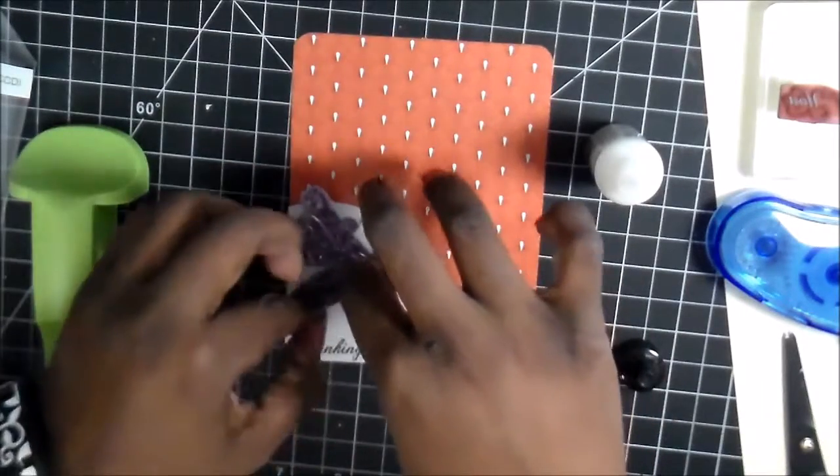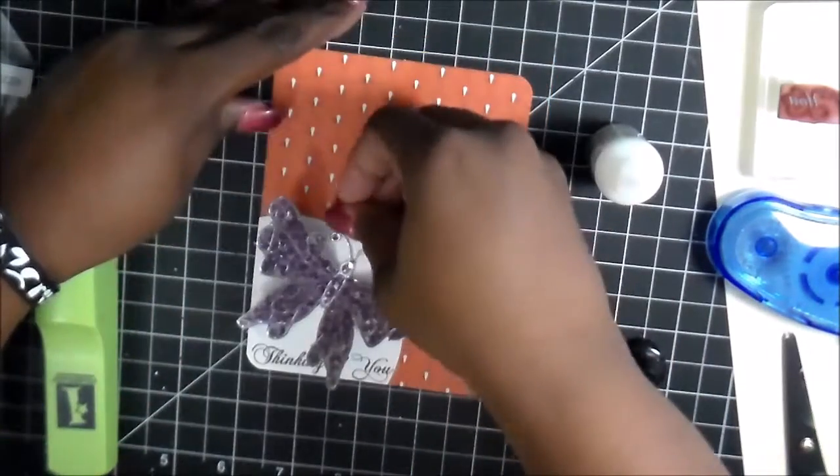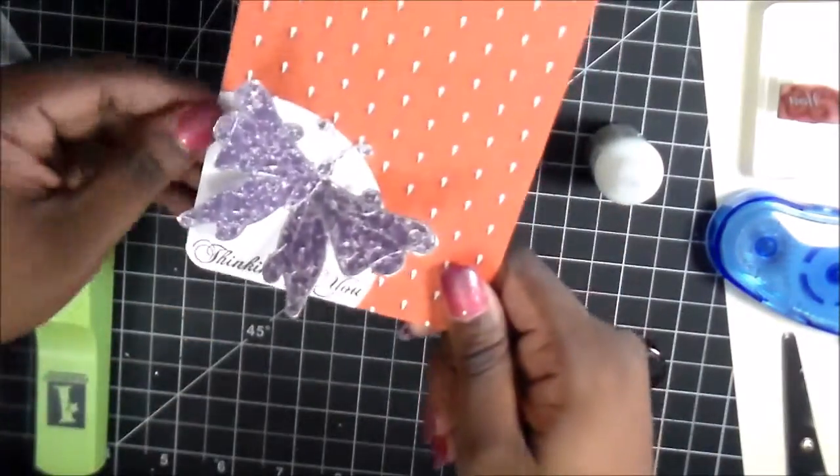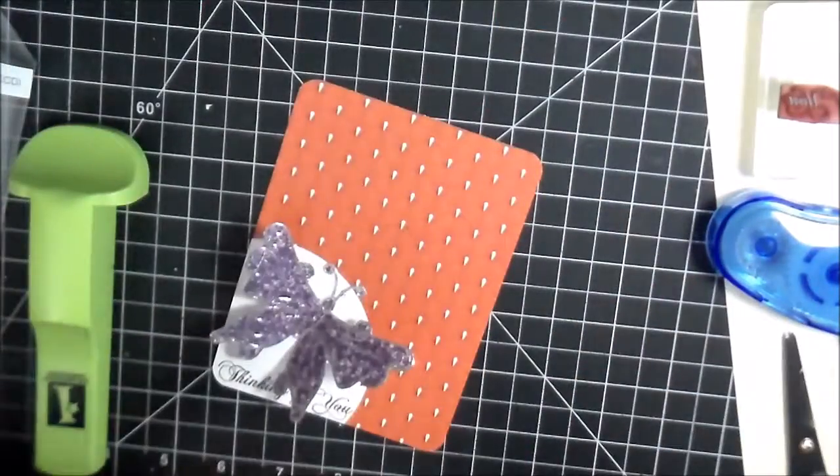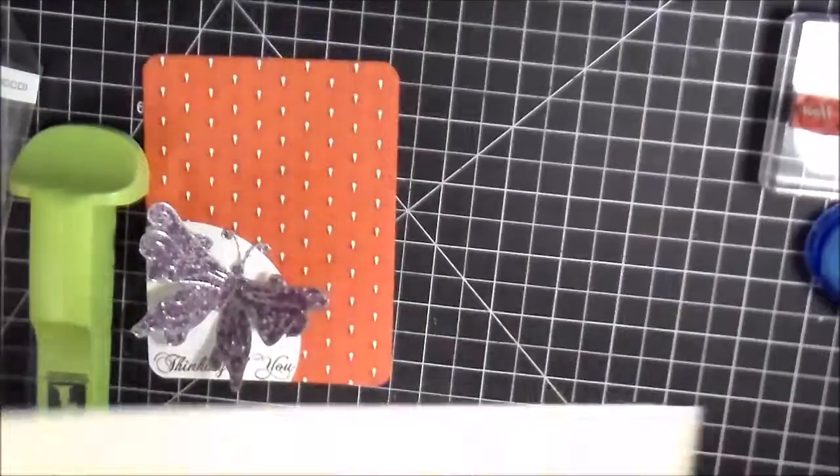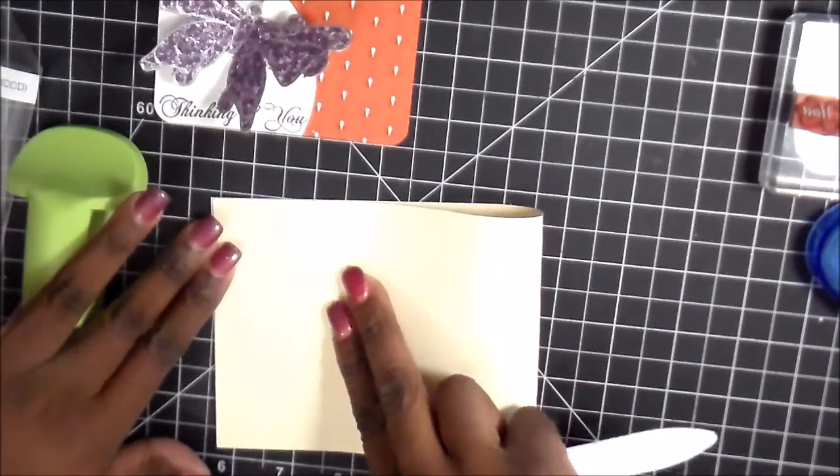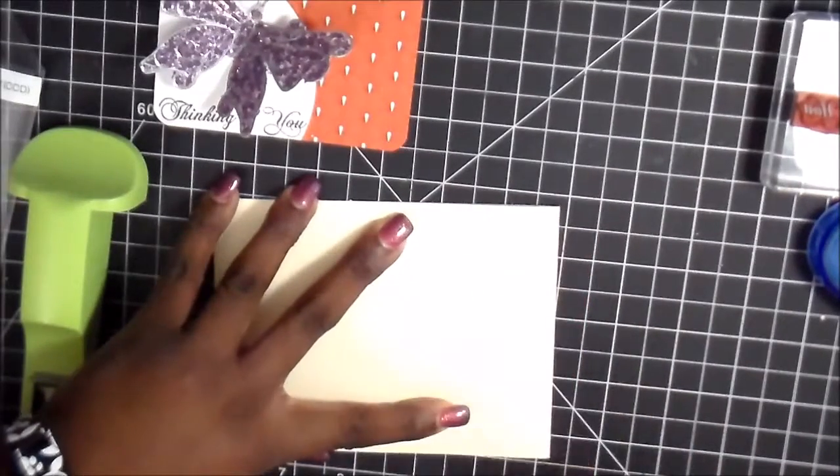And then I was thinking, this really, the card could have been done right here. But you're going to see, what we're going to do is actually use foam tape to lift it up. And then we're also going to use some gemstones to follow the line of the pattern of the paper itself. So I'm just going to take the card base, fold it in half and use my bone folder to make our crease.